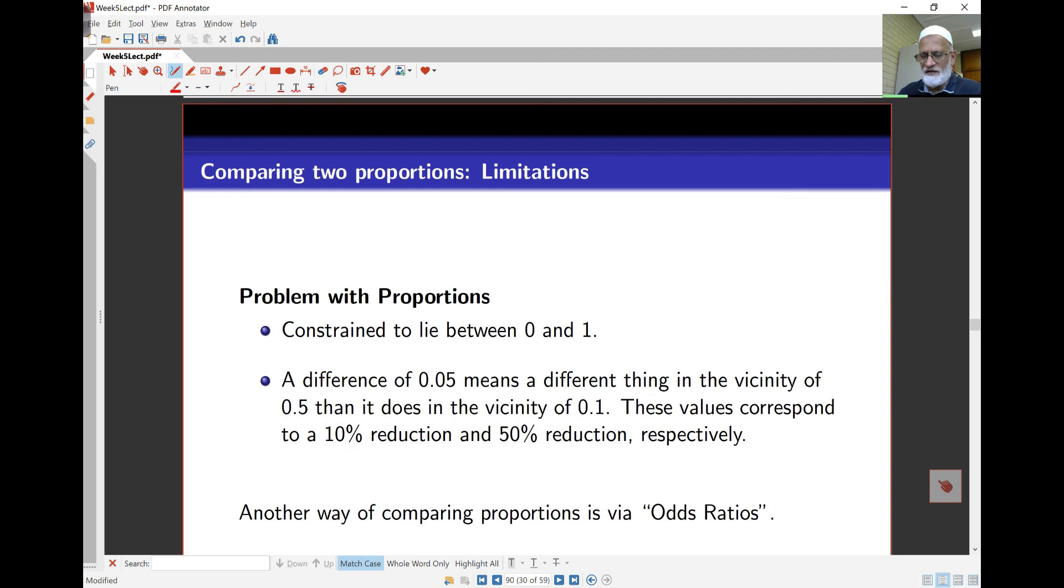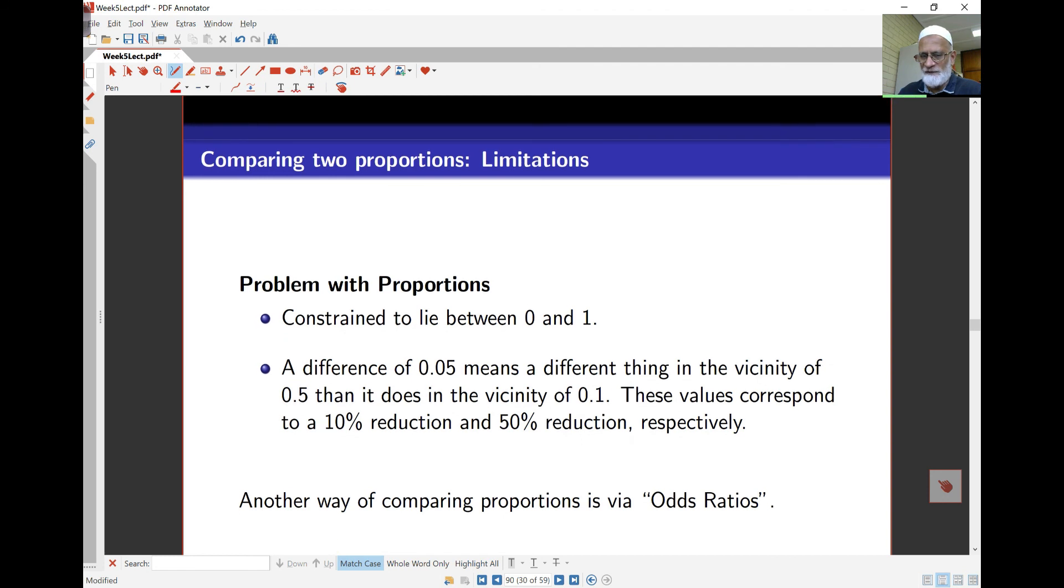We'll start off with looking at the problems with proportions first here. The problem with proportions is it's limited to lie between 0 and 1. And as I was saying earlier, the difference of 0.05 doesn't mean the same thing. It depends on where this is. So closer to 0.5 where the variance is large, it's not such a large difference. But closer to 0.2 or to 1, 0.05 difference is quite large.